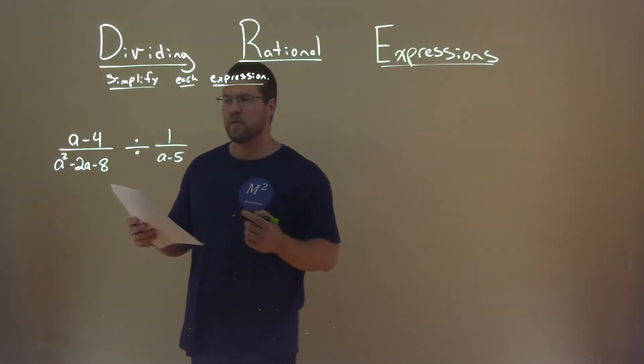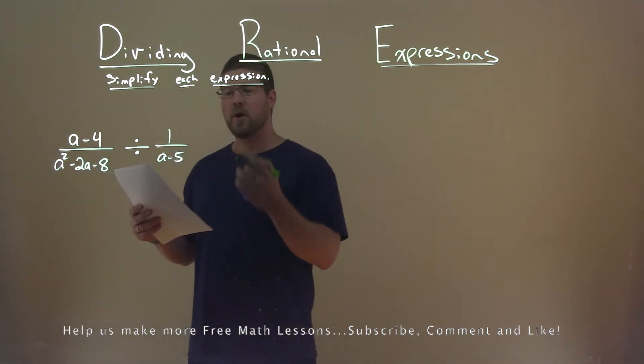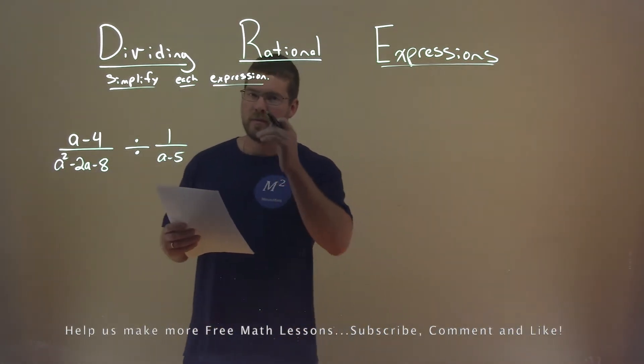We're given this problem right here: a minus 4 divided by a squared minus 2a minus 8, divided by 1 over a minus 5, and we want to simplify this expression.